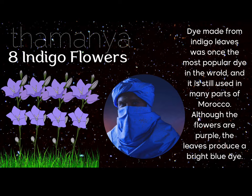Eight — themania. Eight indigo flowers. Dye made from indigo leaves was once the most popular dye in the world and it's still used in many parts of Morocco. Although the flowers are purple, the leaves produce a bright blue dye.